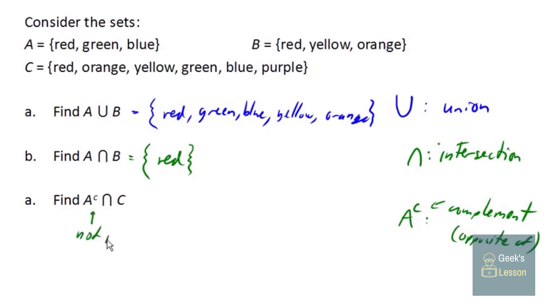So we're looking for everything that's not in A that intersects with C. So from a visual point of view, we're looking for everything that's not in A, but that intersects with, or is also in C. So it needs to be inside C, but not inside A. So we're looking for this stuff here. We're looking for the stuff that's not in A, but is in C. So C is the list of all these colors here. We want the ones that are not in A. So we don't want red. We don't want green. We don't want blue. We just want the other ones. So that would be orange, yellow, and purple.